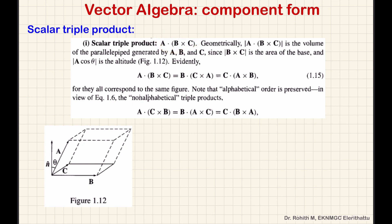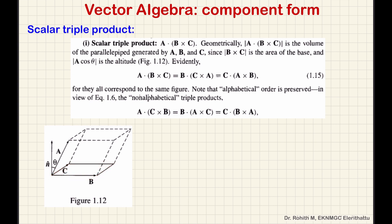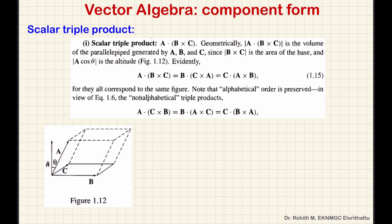The scalar triple product is geometrically equal to the volume of the parallelepiped generated by vectors A, B, and C. The scalar triple product gives you the volume of this parallelepiped. The A cos theta component multiplied above will give you the volume of this parallelepiped.